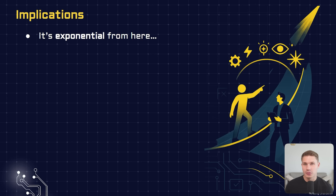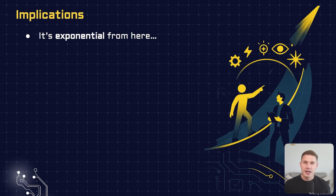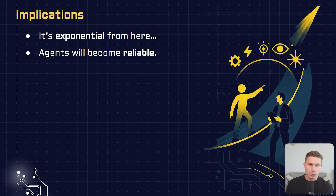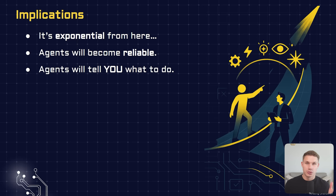This has huge implications for the world of AI agents. First of all, it's exponential from here. With this release, OpenAI has basically solved math — and large language models are based on math, so they will be able to build new AI systems faster. Agents will finally become reliable. One of the biggest bottlenecks preventing mass adoption of AI agents is their reliability. Although the new reasoning models are still not perfect, the fact that they can reason after every single tool call means they can better understand and correct their own mistakes, just like humans would.